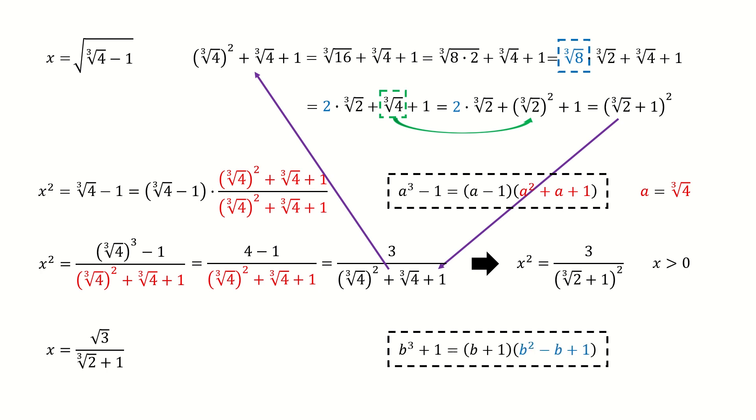So we use this formula. But in this case, b equals cubic root 2. Then we introduce this blue term on both numerator and denominator.